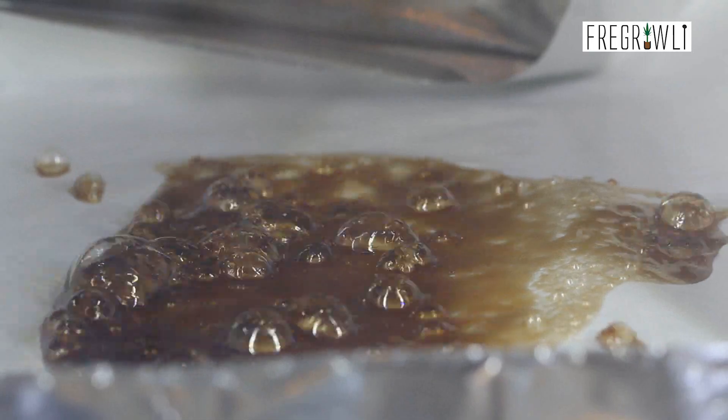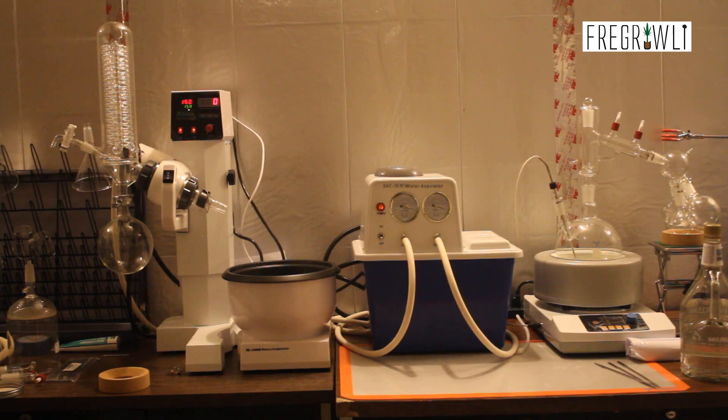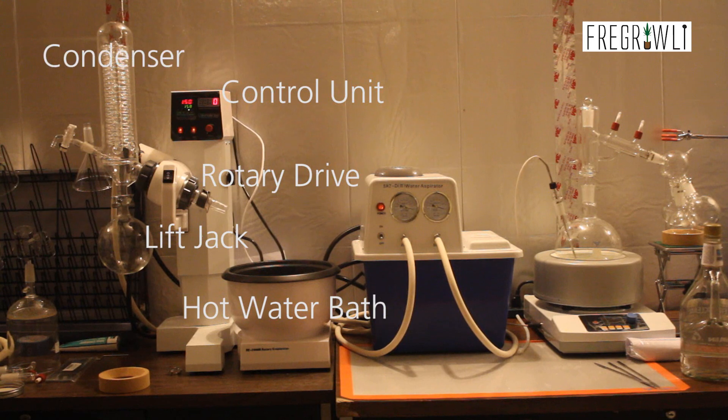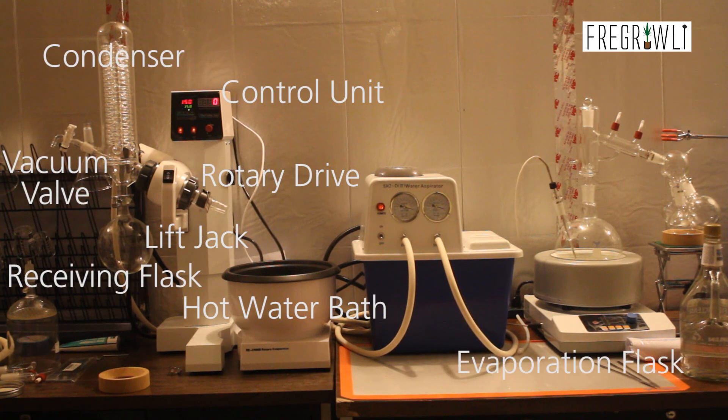There are eight basic components to a rotovap: the control unit, the rotary drive, the lift jack, the hot water bath, the condenser, the receiving flask, the vacuum valve, and as you see here, the evaporation flask.